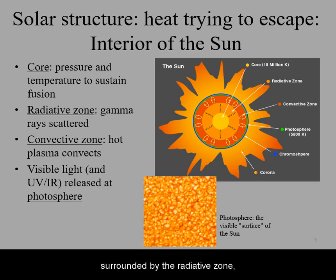surrounded by the radiative zone, then the convective zone, and the surface of the Sun is known as the photosphere.